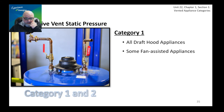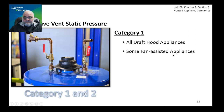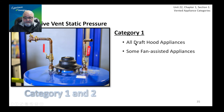For category one appliances, they all have draft hood appliances or fan-assisted appliances. In the codebook, Annex C says you size only category one appliances, and you have only two types: the draft hood appliance or the fan-assisted appliance. Category one will be either draft hood or fan-assisted appliances.